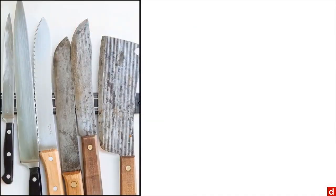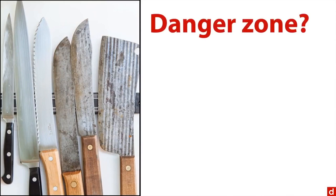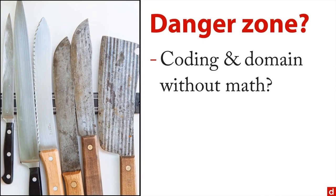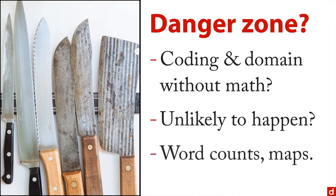And then finally, there's what Conway called the danger zone. That's the intersection of coding and domain knowledge but without math or statistics. He says it's unlikely to happen, and that's probably true. On the other hand, I can think of some common examples, like word counts, where you take a large document or series of documents and count how often each word appears. That can actually tell you some important things. Also drawing maps and showing how things change across place and maybe across time. You don't necessarily have to have the math, but it can be very insightful and helpful.